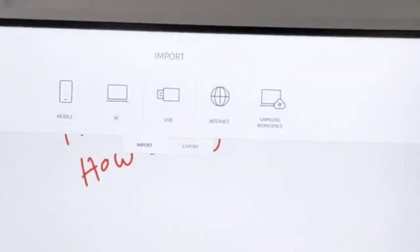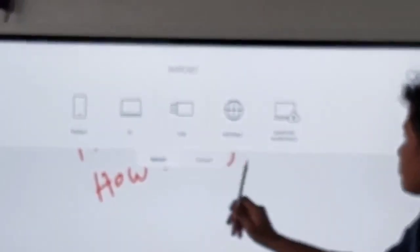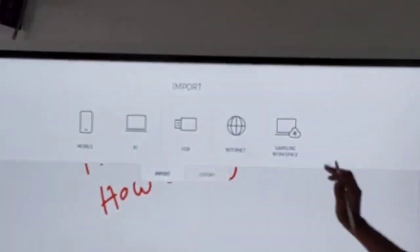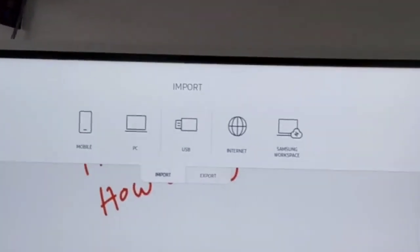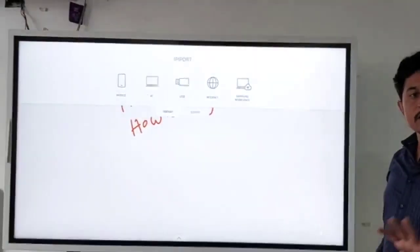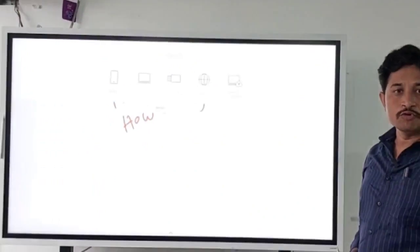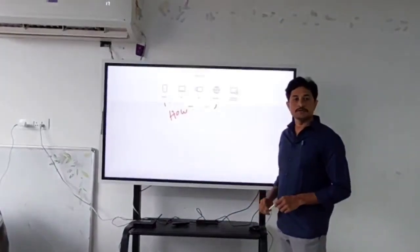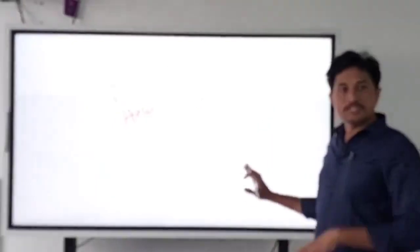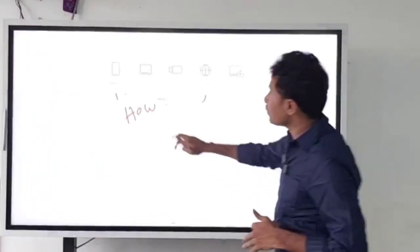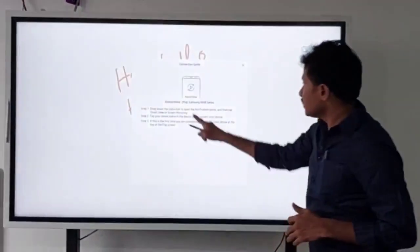Import: Mobile, PC, USB, Internet and Samsung Workspace. Now, we will select the Smart View option of this board. Here, we will show you the items in the cell phone. It is equipped with the cell phone. We have this facility.